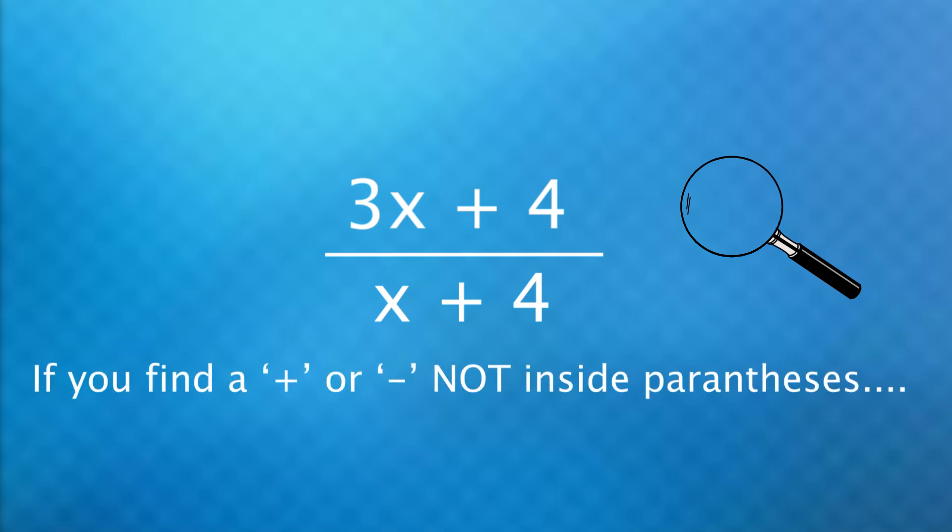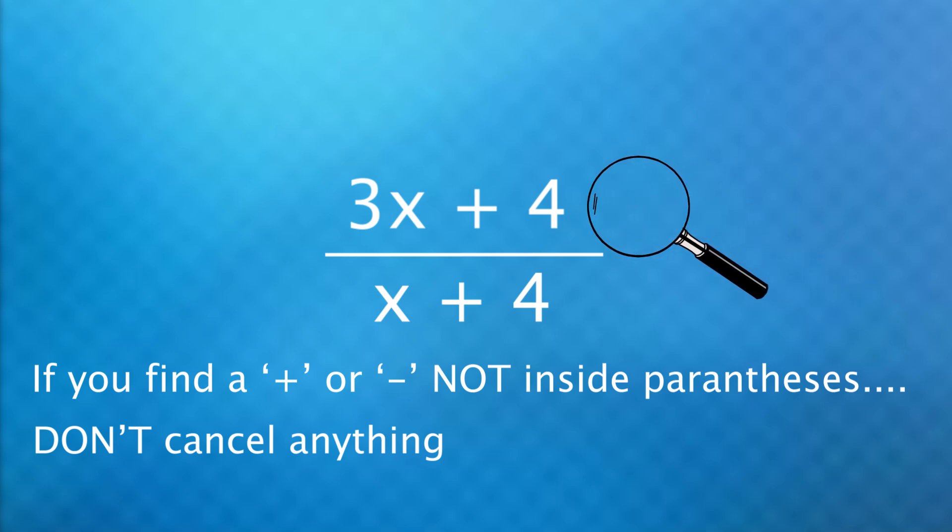You're going to look in both the numerator and the denominator. If you find just one addition or subtraction sign that is not inside parentheses, do not cancel anything. This is not a perfect method, but it will work for a lot of problems. For our question here, we see there is an addition sign up here. It's not in parentheses, therefore we cannot cancel anything. This is pretty much as simplified as it gets.